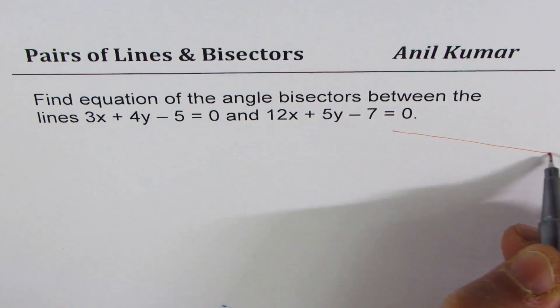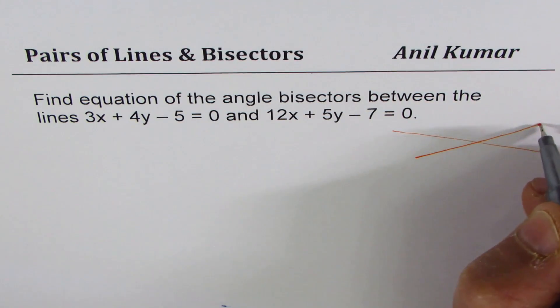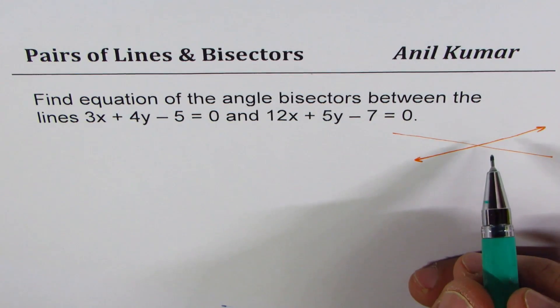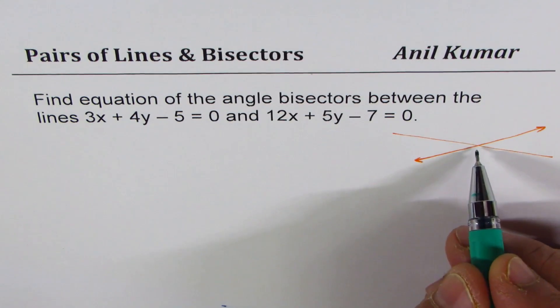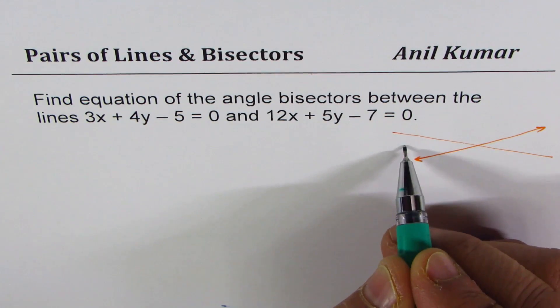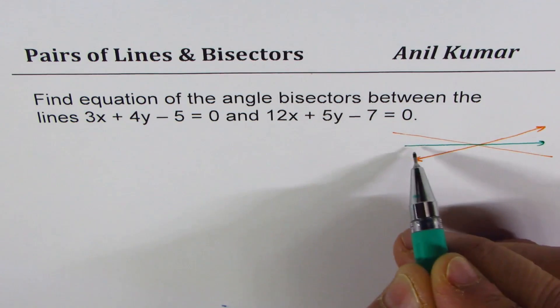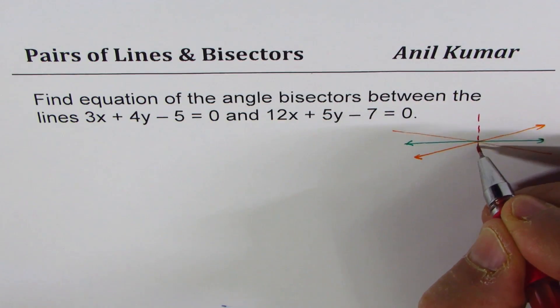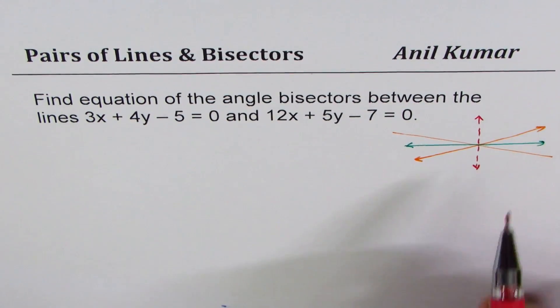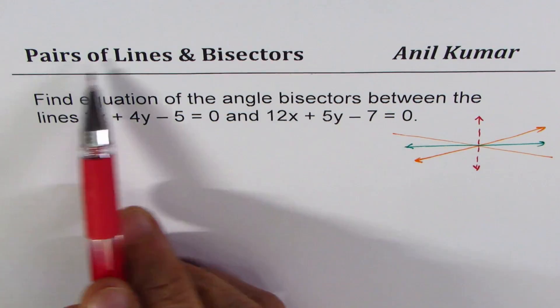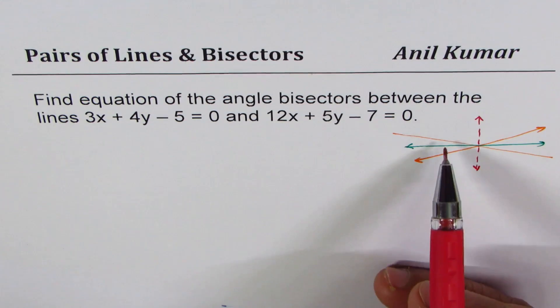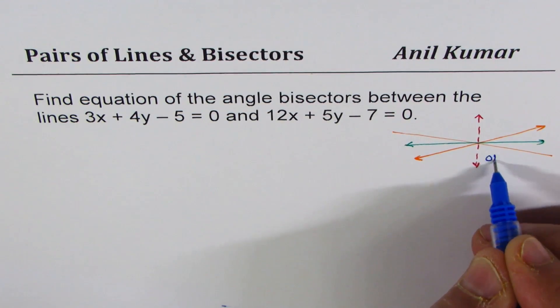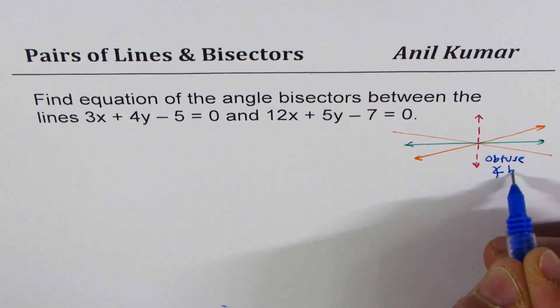Let me sketch two lines in general. They will intersect somewhere - we're assuming they're not parallel. An angle bisector is a line bisecting the angle they make. You can always have two angle bisectors. One is the acute angle bisector, the other is the obtuse angle bisector.